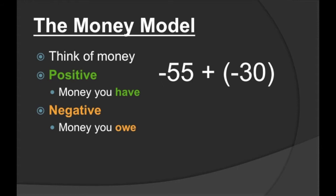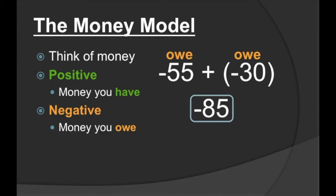And how about negative 55 plus negative 30? Negative 55 means we owe 55. Negative 30 means we owe 30. Since we owe 55 and we owe 30 more, we put the two together because they're both money that we owe. So 55 and 30 together means that we owe a total of 85, making our answer negative 85.